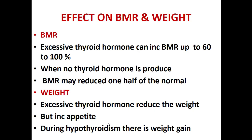Excessive thyroid hormone can increase BMR by 60 to 100%, while lack of thyroid hormone may reduce BMR to half of normal. Thyroid hormone reduces weight due to high BMR but increases appetite. During hypothyroidism there is weight gain, and hypothyroid patients tend to be more obese.